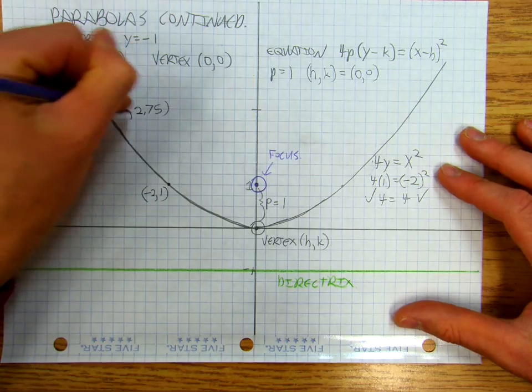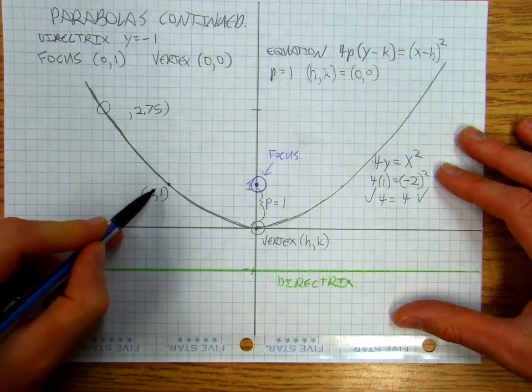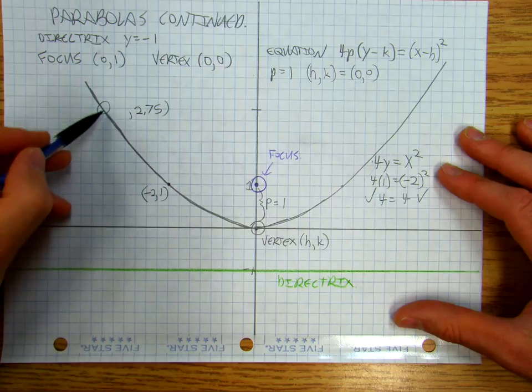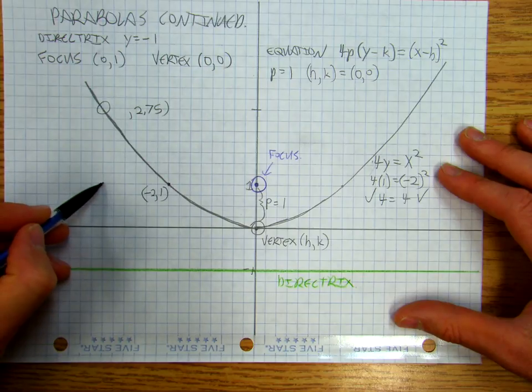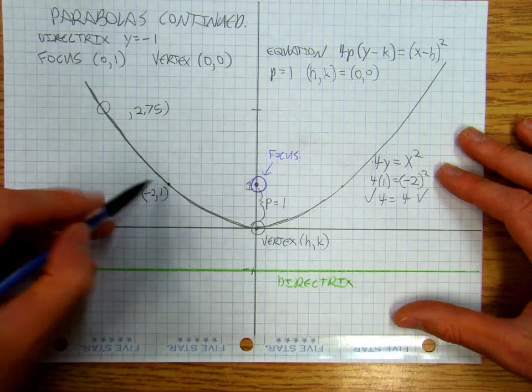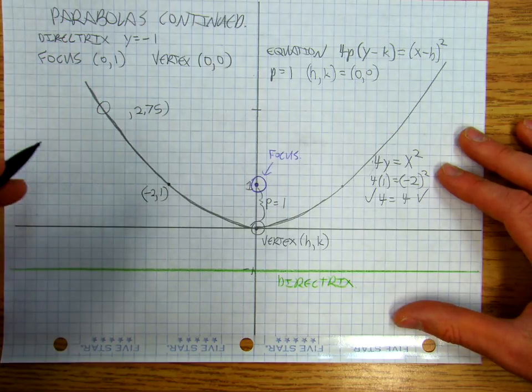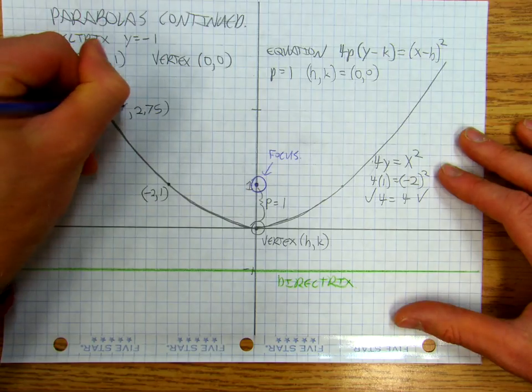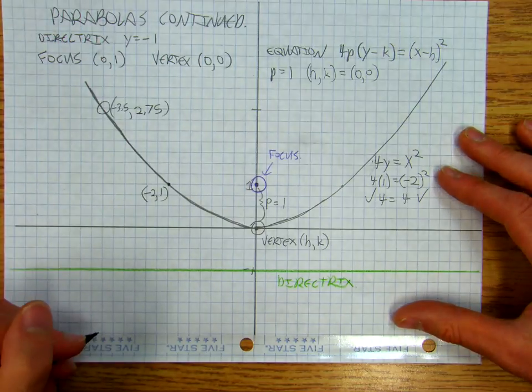and that's 1, 2, 3, 4, so that's negative 3.5.